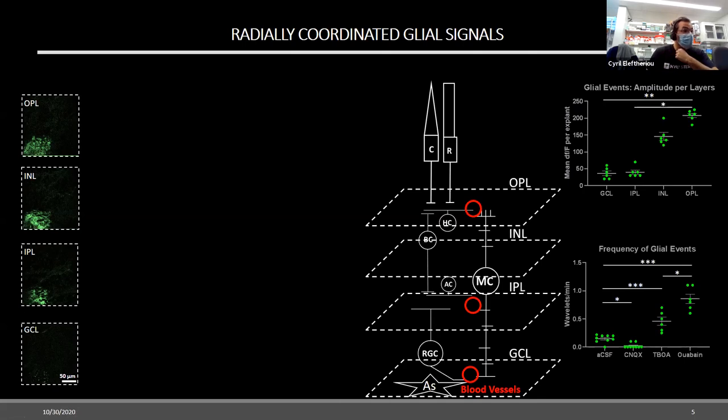And we also modulated these events with pharmacological agents. So CNQX blocks ionotropic glutamate receptors and also the off signals from the photoreceptors to the bipolar cells. And these were able to completely abolish the retinal waves. TBOA, on the other hand, is a blocker of the glutamate recycling transport on the Mueller glia. And when we block those, we flood the retina with glutamate, and we have a significant increase in these waves, which hints at a glutamatergic origin for these spontaneous waves.